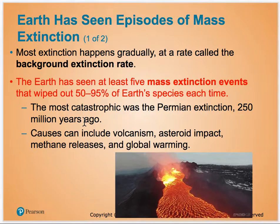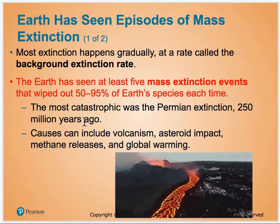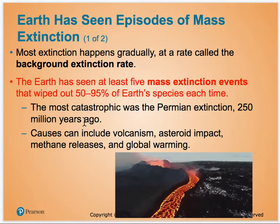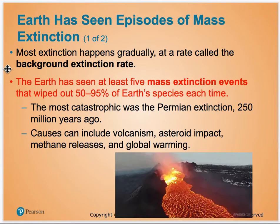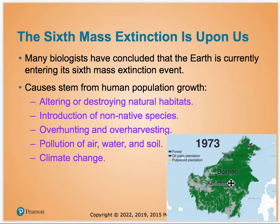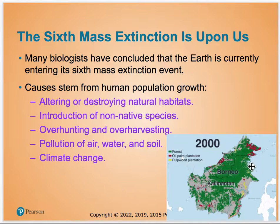The Earth has had different mass extinction events where 50% to 90% of living things died all at once. Scientists estimate we are on the verge of a sixth mass extinction. Reasons include altering habitats very quickly, moving species to places where they don't belong, non-native species, over-hunting, pollution, and climate change.